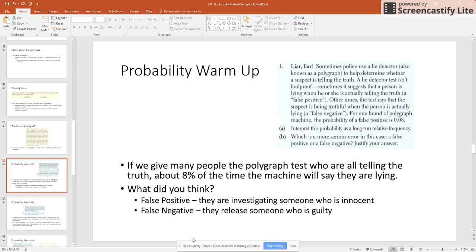Interpret this probability as a long run relative frequency. So my 0.08 translates to 8% and it's a false positive. So let's think back to the beginning now. So a false positive tells me that the machine is wrong because it's false and the machine is checking for lying. So the machine is saying that this person is telling a lie when in reality they are actually telling the truth.